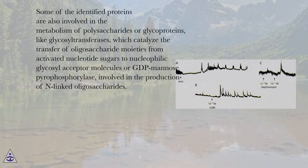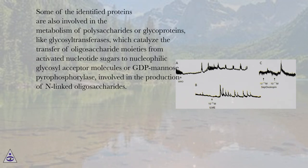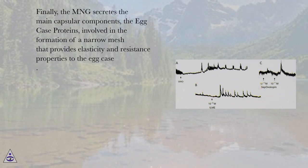Some of the identified proteins are also involved in the metabolism of polysaccharides or glycoproteins, like glycosyltransferases, which catalyze the transfer of oligosaccharide moieties from activated nucleotide sugars to nucleophilic glycosyl acceptor molecules, or GDP-mannose pyrophosphorylase, involved in the production of N-linked oligosaccharides. Finally, the MG secretes the main capsular components, the egg case proteins, involved in the formation of a narrow mesh that provides elasticity and resistance properties to the egg case.